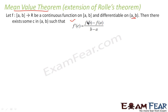In Rolle's theorem, f(b) must equal f(a), so that expression becomes 0. But mean value theorem is a more generalized version of this theorem where we don't have the third condition that f(b) should equal f(a).